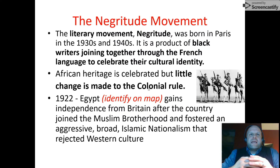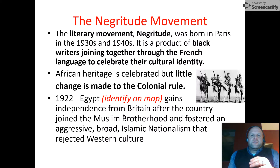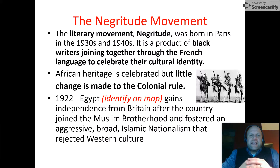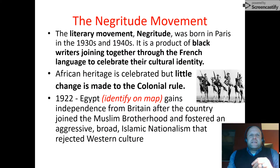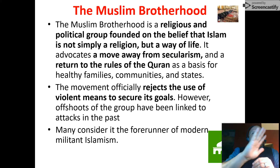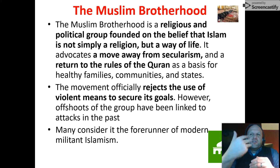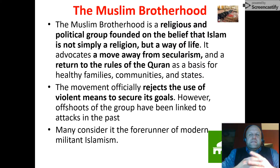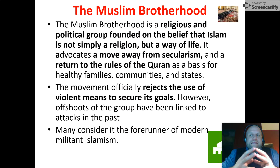The group that helps them gain independence from Britain is the Muslim Brotherhood. There is this broad Islamic nationalism that rejects Western culture. The Muslim Brotherhood is a religious and political group founded on the belief that Islam is not simply a religion but a way of life. They wanted to move away from secularism and return to the fundamentals of the Koran. Basically, it's a forerunner of modern militant Islamism, and they are the group that helps Egypt gain independence.